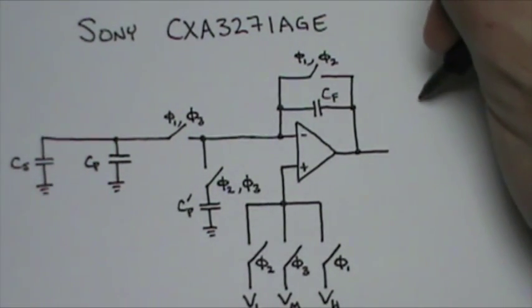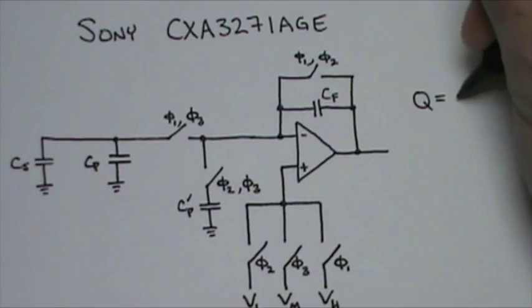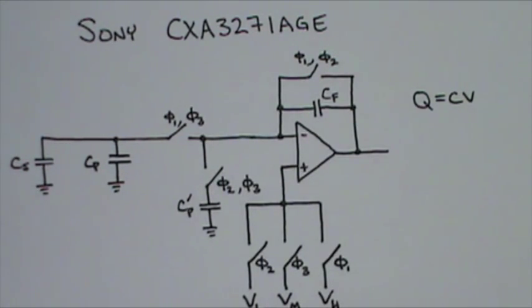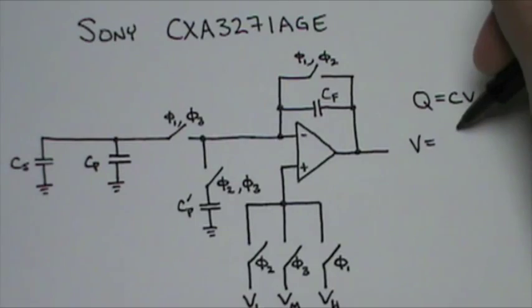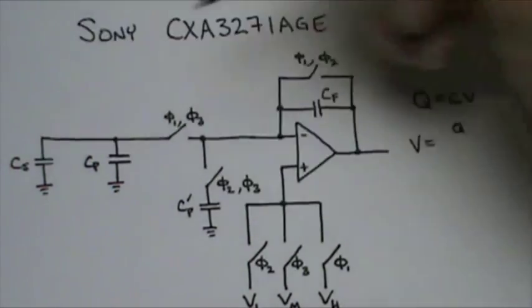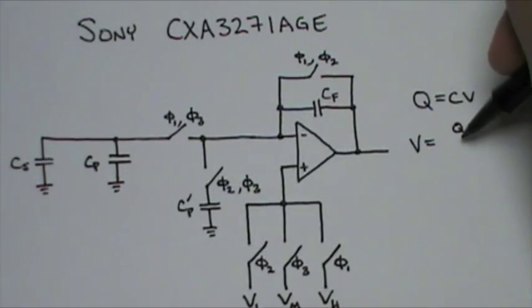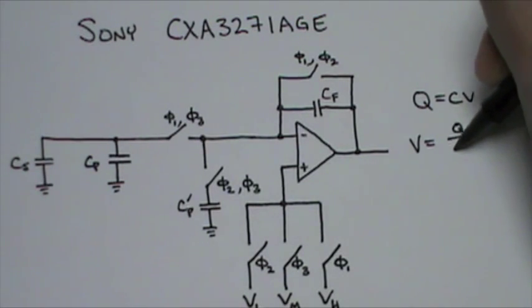How much voltage does this circuit output? Let's take a look at the familiar capacitor charge equation, Q equals CV. The voltage output is going to be equal to the charge stored on our sensed capacitor divided by the capacitance of our feedback capacitor, CF.